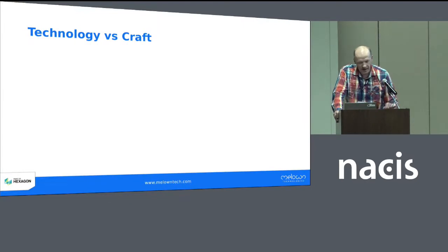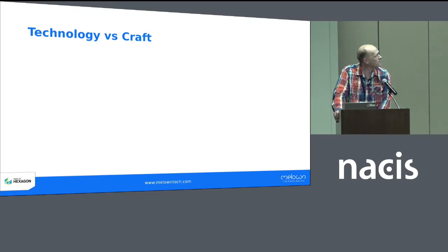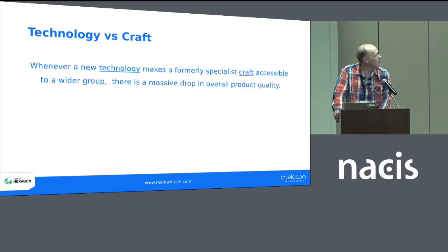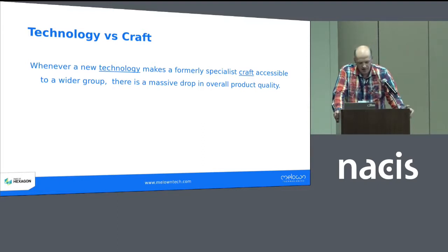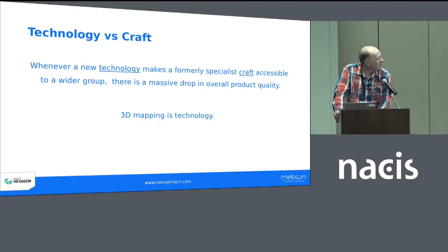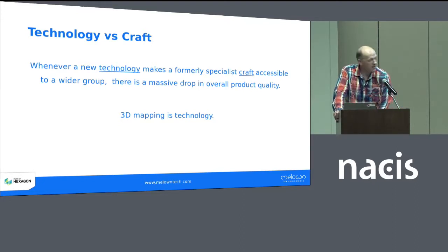My take on this is that this is a classical example of the technology versus craft conflict. Whenever a new technology makes a formerly specialist craft accessible to a wider group, there's a massive drop in overall product quality — and that's something you'll be experiencing everywhere. But in this particular case, 3D mapping is the technology and cartography is the craft.